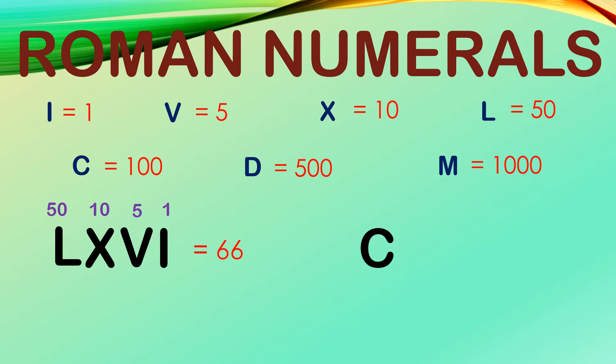Next, C, C, L, X. C equals 100, and we have two of them. L is 50, X is 10, and all together, we have 260.